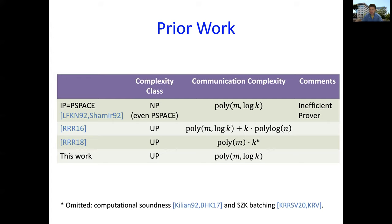The result there was also for UP and we managed to get non-trivial communication complexity. Like the current result, the dependence on M is polynomial. There's this poly M log K dependence, but we also had an additive dependence on K. So really that protocol wasn't sublinear in K. Two years ago, we managed to get rid of this additive dependence on K, but that came at a larger multiplicative cost, poly M times K to the epsilon.